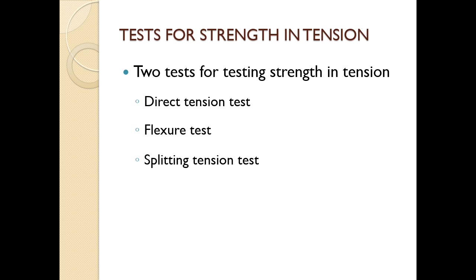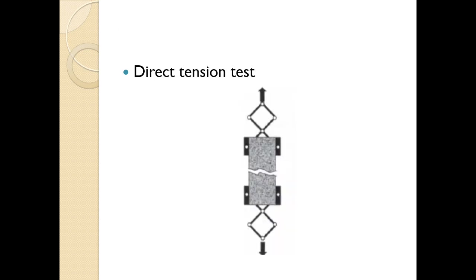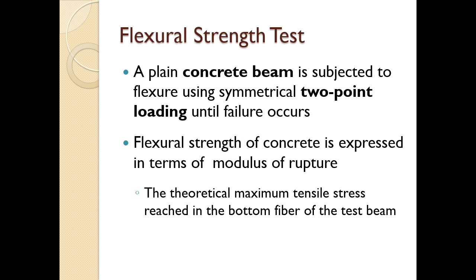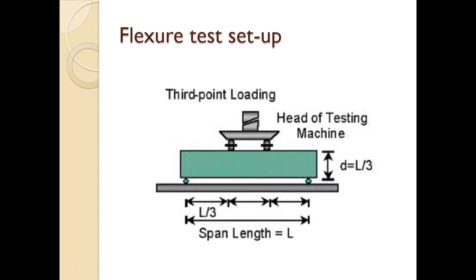The two main important tests are the flexure test and the split tensile strength test. In the flexure strength test, a plain concrete beam is subjected to flexure using symmetrical two-point loading until failure occurs. The flexure strength of concrete is expressed in terms of modulus of rupture, which is the theoretical maximum tensile strength reached in the bottom fiber of the test beam.